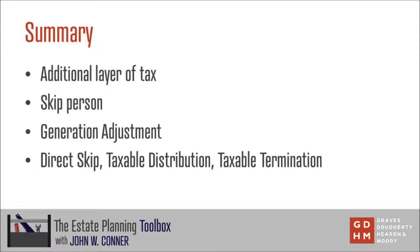In summary, the GST tax is very complicated. If you're considering making a gift to someone who might qualify as a skip person, you need to discuss it with your estate planning attorney. The GST tax is an additional layer of tax, which means that if you make a taxable gift to a skip person, you're going to pay not only gift tax or possibly estate tax, but also generation-skipping transfer tax. Remember that the generation-skipping transfer tax only applies to transfers made to skip persons — someone who is more than one generation below your own, such as grandchildren or great-grandchildren, or someone who is more than 37 and one half years younger than you. But do keep in mind that there is a possible generation adjustment — the example we talked about was where a grandchild is predeceased by their parent, the grandparent's child, and because of that the grandchild steps into the generation of the child, meaning for purposes of transfers from the grandparent to the grandchild, that grandchild is no longer a skip person and those transfers are no longer subject to the generation-skipping transfer tax.